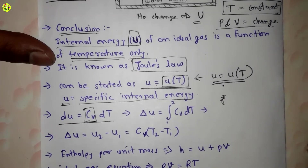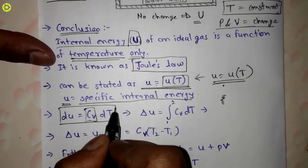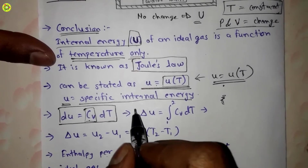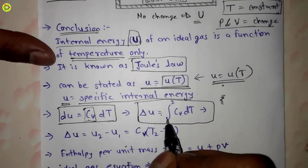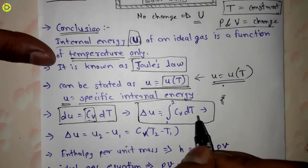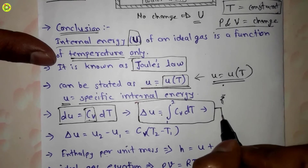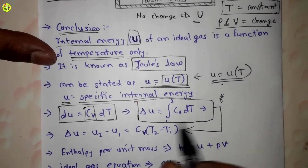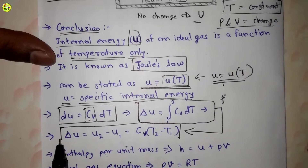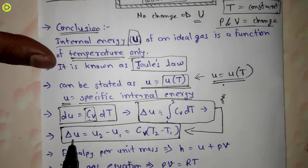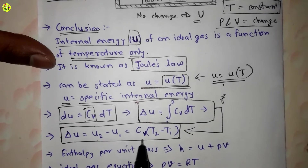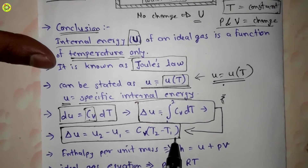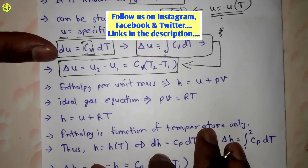Now suppose there is a change of internal energy of an ideal gas from state 1 to state 2. After integrating the equation du = cv·dT from 1 to 2, we get delta u equal to the integral from 1 to 2 of cv·dT. After integrating, we get delta u, that is the change in specific internal energy, equal to u2 minus u1, which equals cv multiplied by (T2 minus T1).